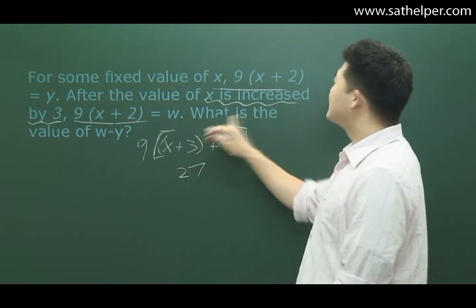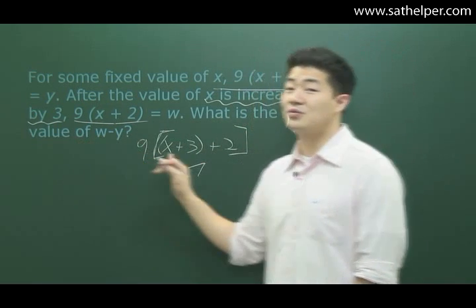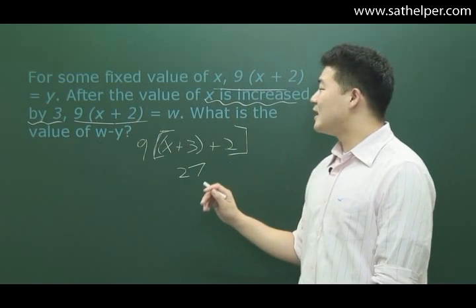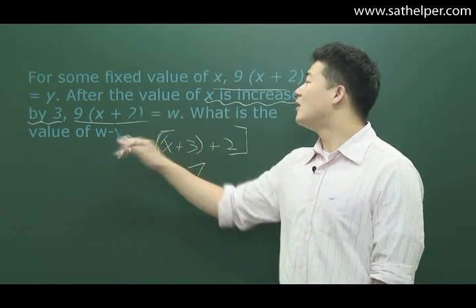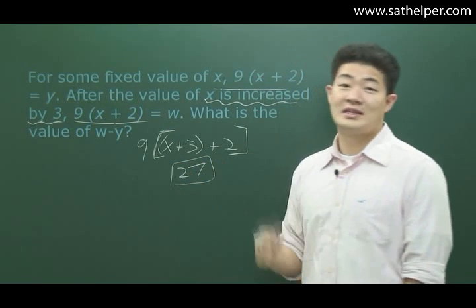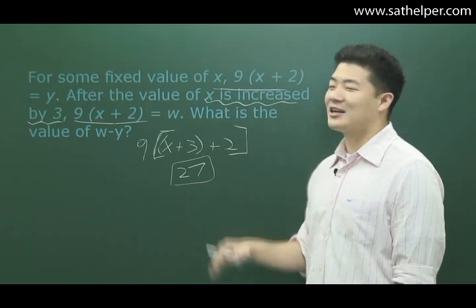So, what is the value of w minus y? What that basically means is w and y are exactly the same except for the fact that w, since x is increased by 3, will have a greater number of 27. Therefore, the answer is actually 27.